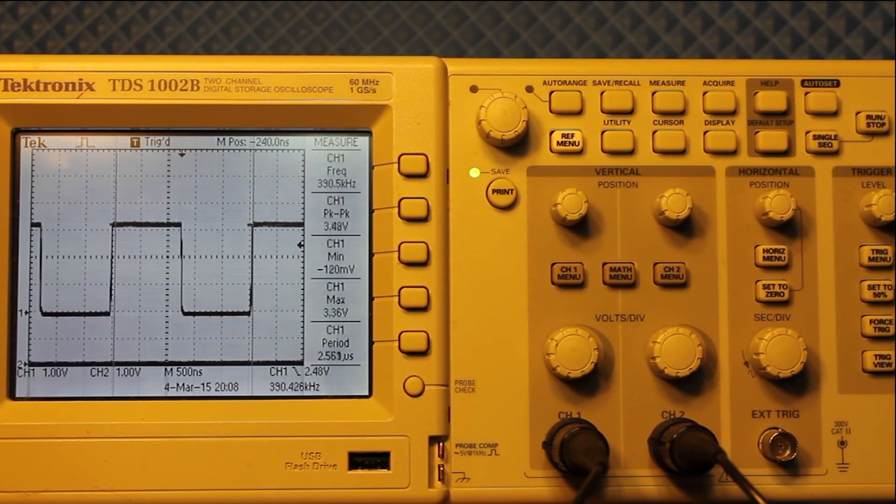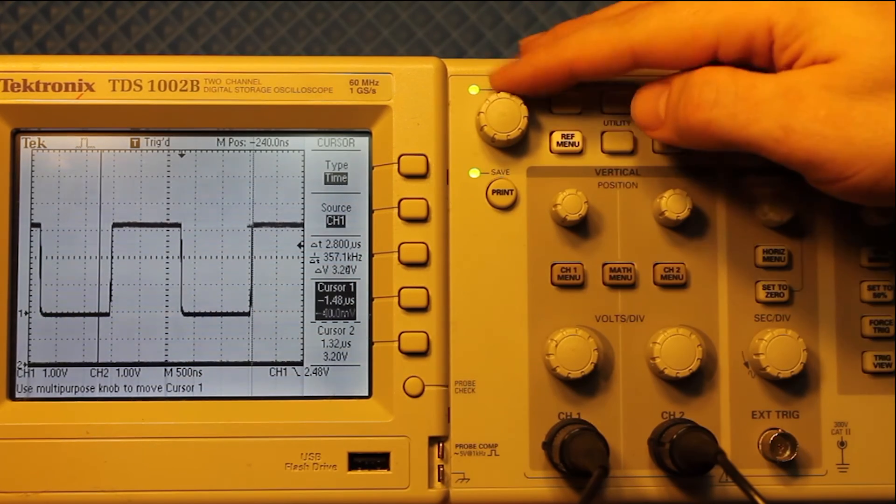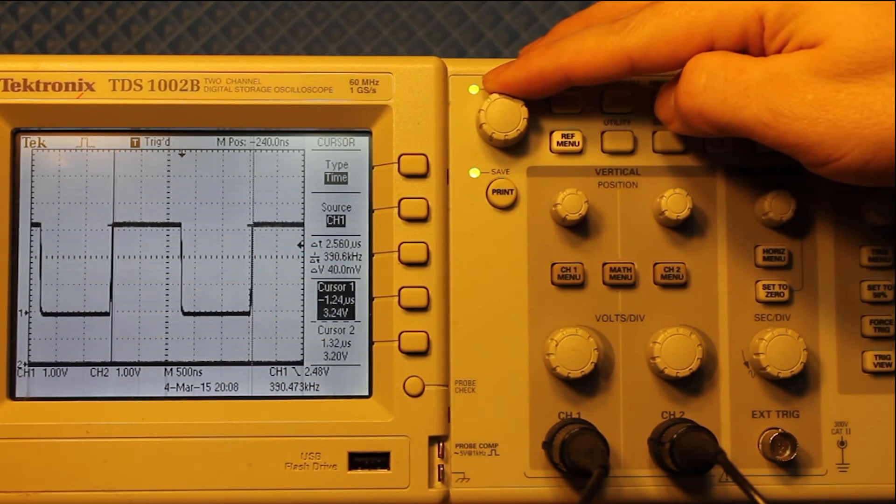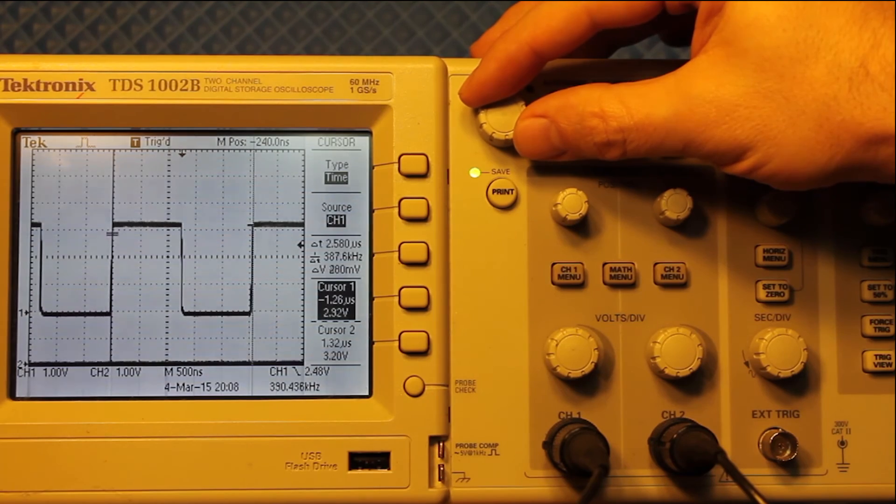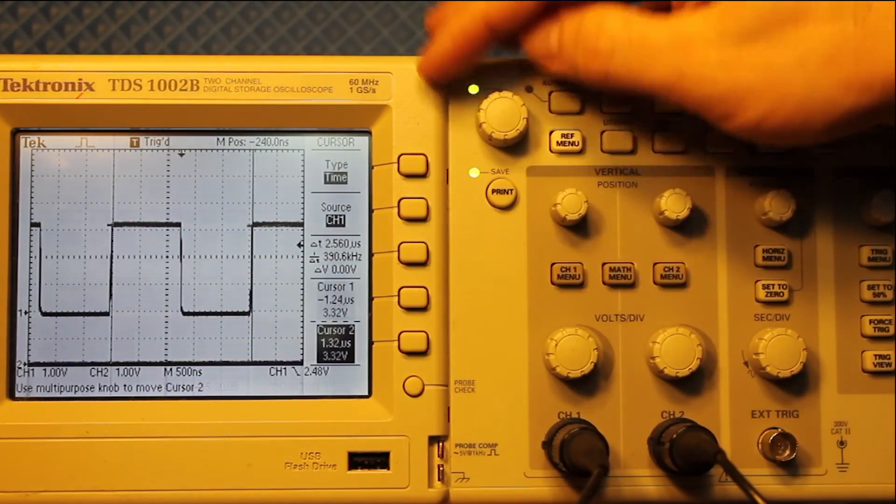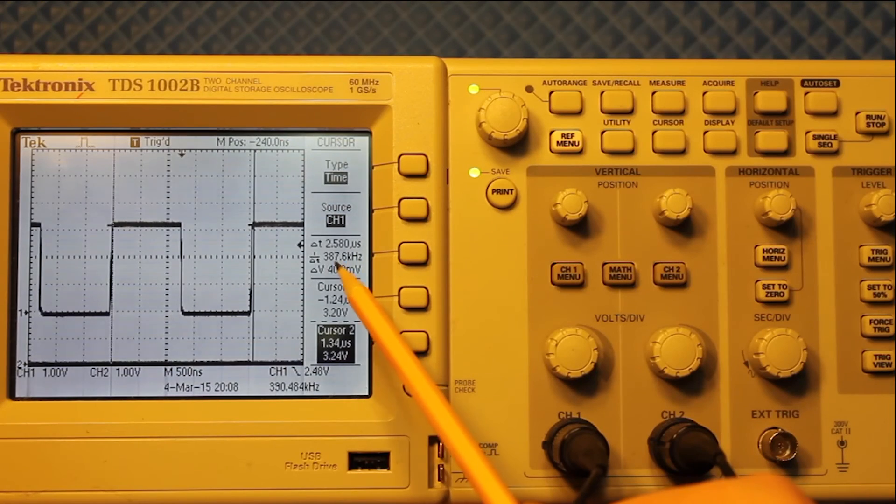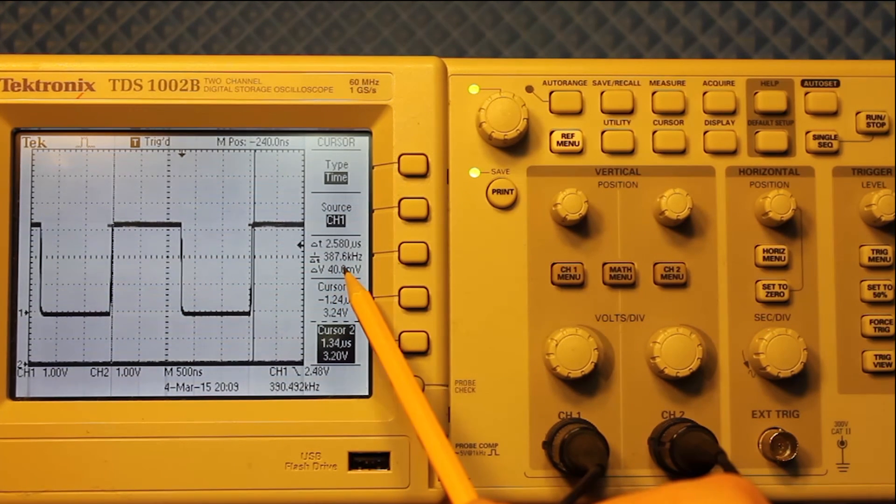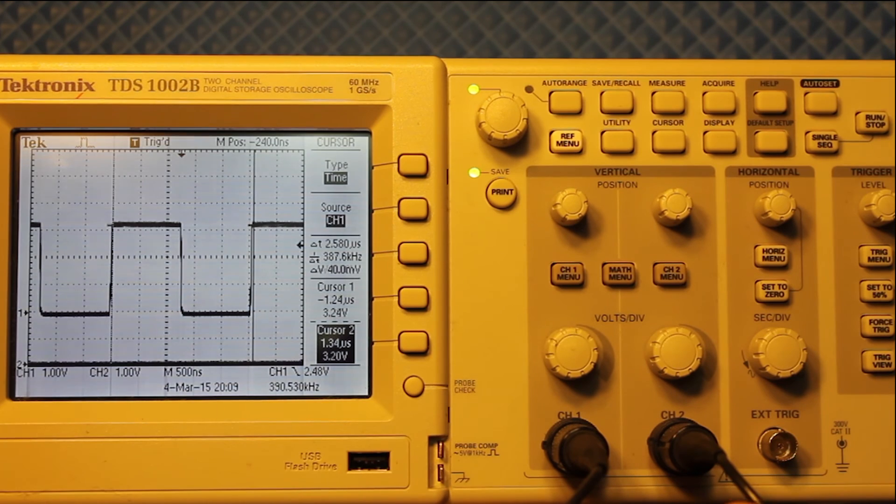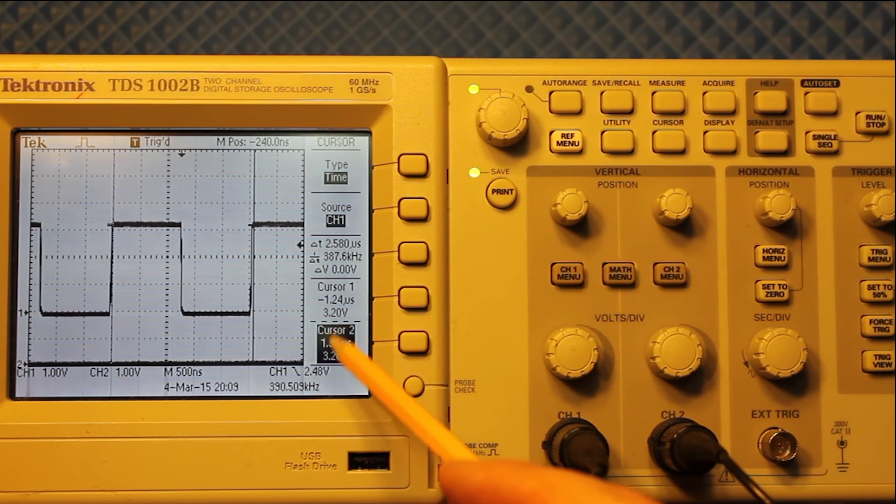But it looks like we have a nice clean square wave signal and it's consistent. We can also use the cursor here to double check the measurement. So I'm on cursor 1 here, you can see there's a little horizontal bar that indicates where the cursor is at. Set it right there. Hit cursor 2 and I already have it set up but there you go. You can see again just over 2.5 microseconds for a period and just under 400 kilohertz for the frequency. Both cursors are just 3.2 volts or so.